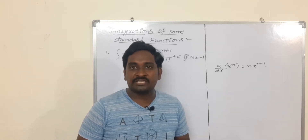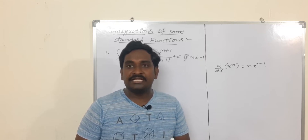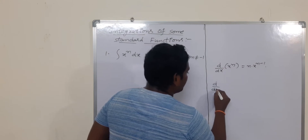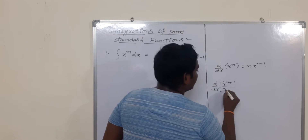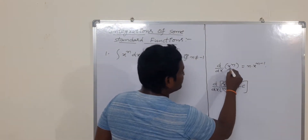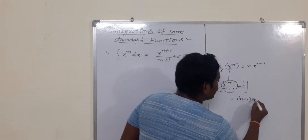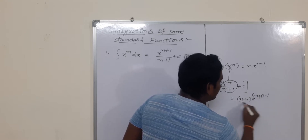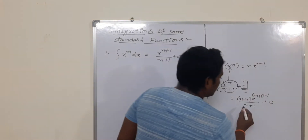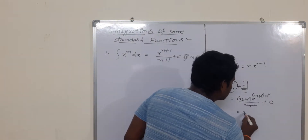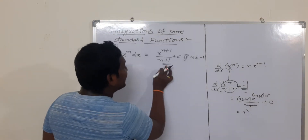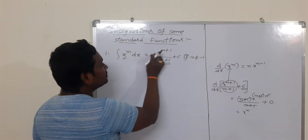From the definition, we understand that derivative and integration are inverse procedures to each other. So find out the derivative of x^(n+1)/(n+1) + c. This is in the form of x^n, so whose derivative is (n+1) into x^(n+1-1) divided by (n+1), plus differentiation of constant which is 0. The (n+1) terms cancel and +1-1 cancels, so we simply get x^n. We observe this is the anti-derivative, that's why integration of x^n equals x^(n+1)/(n+1) + c.